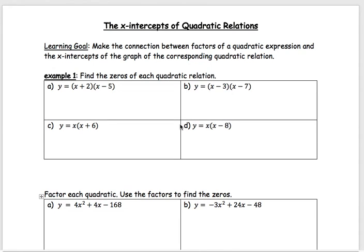Today we're going to look at the x-intercepts of quadratics. X-intercepts are the same as zeros, so I'm going to be saying zeros a lot — go and find zeros — but essentially what I'm saying is go and find the x-intercepts. In the past few lessons you have been factoring quadratics, and what we're going to do here is graph this and show you that you can look at these equations and find where the x-intercepts, or zeros, are.